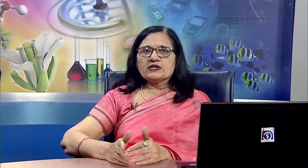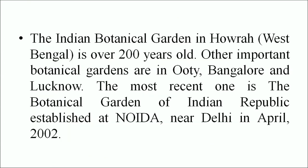Ex-situ conservation — botanical gardens and zoos. Botanical garden: a place where plants, especially ferns, conifers and flowering plants, are grown and displayed for the purpose of research and education. The main objectives are ex-situ conservation and propagation of important threatened plant species, serving as a center of excellence for conservation research and training, and building public awareness through education on plant diversity and need for conservation. The Indian Botanical Garden in Howrah, West Bengal is over 200 years old. Other important botanical gardens are in Ooty, Bangalore and Lucknow. The most recent is the Botanical Garden of Indian Republic, established at Noida near Delhi in April 2002.